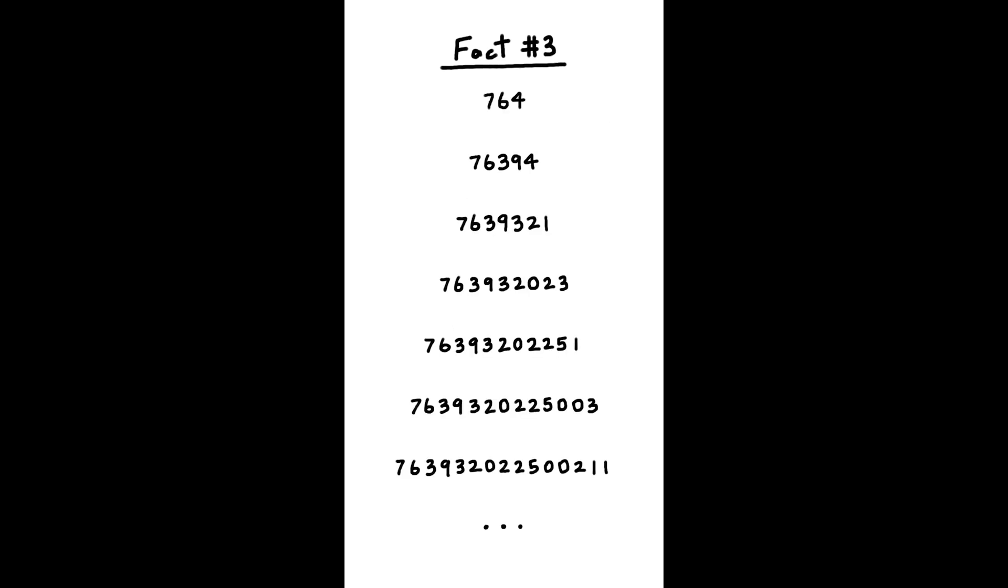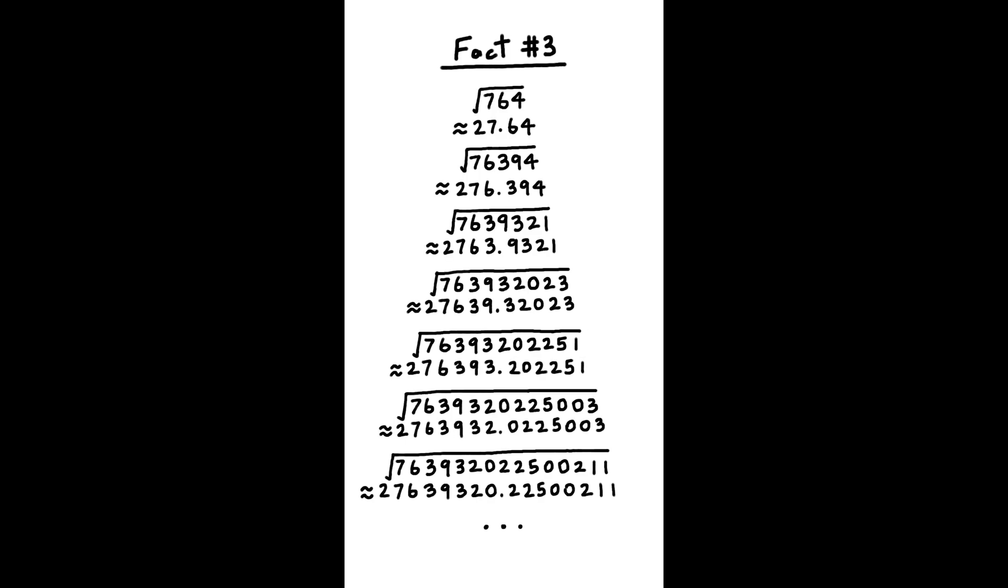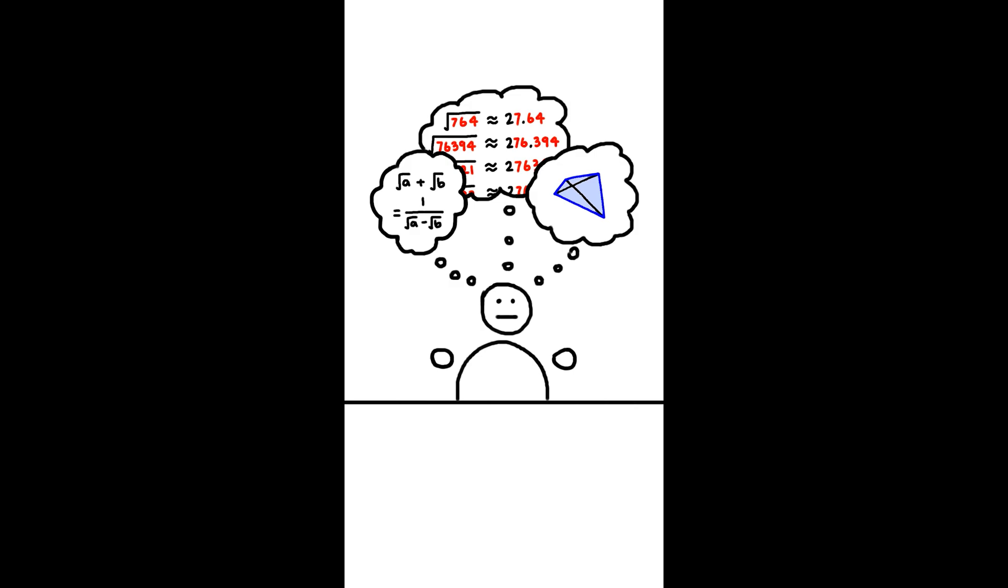Third, this infinite sequence of numbers has the property that if you square root it, you'll get your original number back hidden within the decimal. Now that you've seen all three facts, take a moment to think about which one is false.